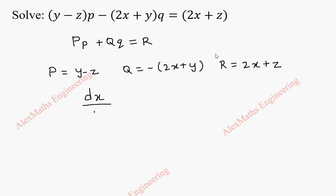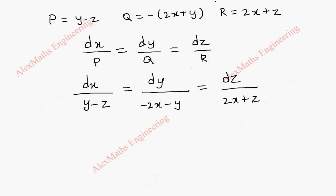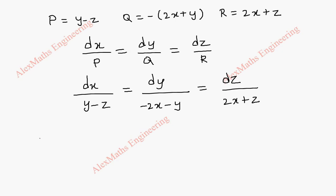To get the solution we have to solve dx/P = dy/Q = dz/R. Now substituting P, Q, R we get dx/(y−z) = dy/(−2x−y), taking the minus sign inside, and the third term is dz/(2x+z). Now we are going to use a multiplier 1, 1, 1.